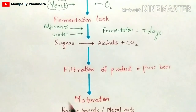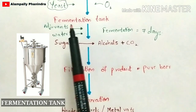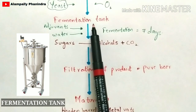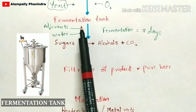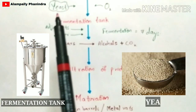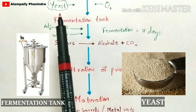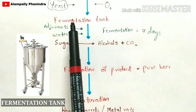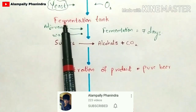After cooling, the wort is added into the fermentation tank, also called a fermenter. Before adding, the fermentation tank should be cleaned properly with water. Along with the wort, yeast is also added. Yeast plays a major and vital role in the production of alcohol — without yeast, the production of beer cannot occur.